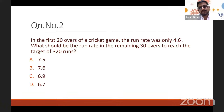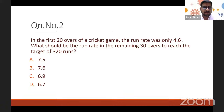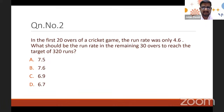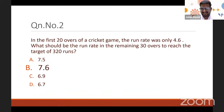Clue: find out the runs scored in the first 20 overs. Since the run rate is 4.6, multiply 20 by 4.6 to get the runs — that is how average works out. Some answers are coming in: people are saying 7.6. Yes, 7.6 is correct!